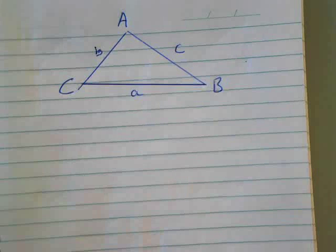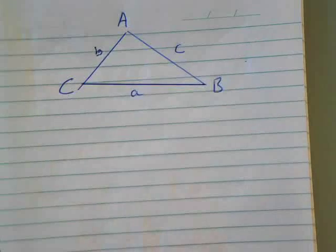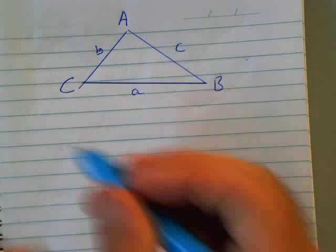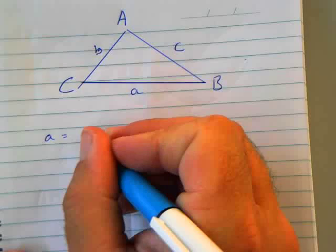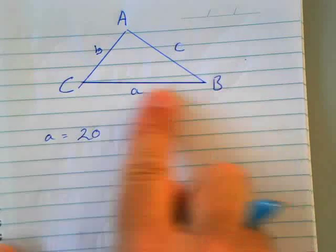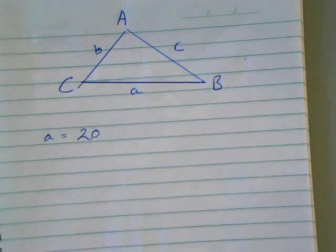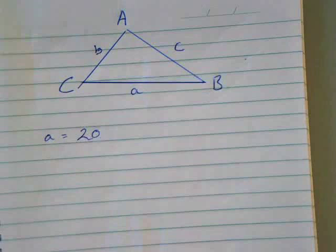So a small letter will always define a side. So if I said to you little a is 20, then I've told you that this length is 20. It's a convention.